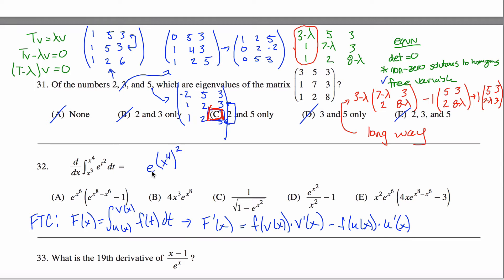So this is F of V of X, and I want to multiply that by V prime of X, which would be 4X cubed.